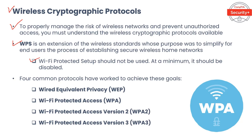Since WPS was determined to be insecure, several protocols have been developed to protect wireless networks. The primary goals of these cryptographic protocols are to protect the authentication and connection process and to ensure the confidentiality of data sent through the air. There are four common protocols: WEP, WPA, WPA2, and WPA3. WEP, or Wired Equivalent Privacy, is the original wireless encryption standard and should not be used today.